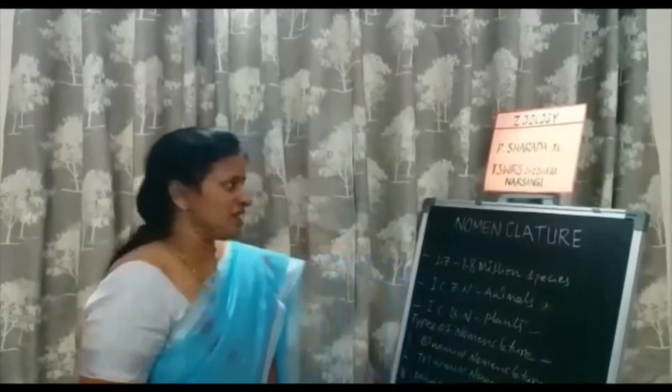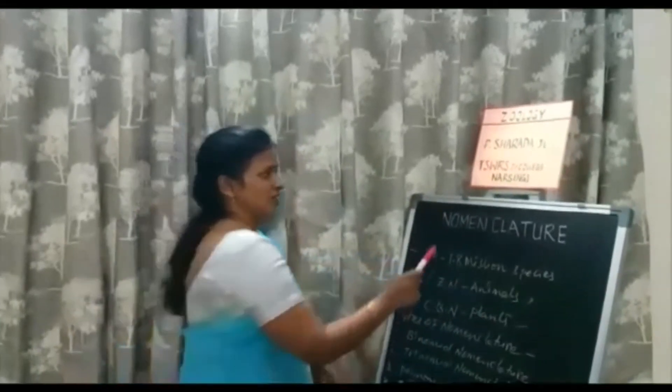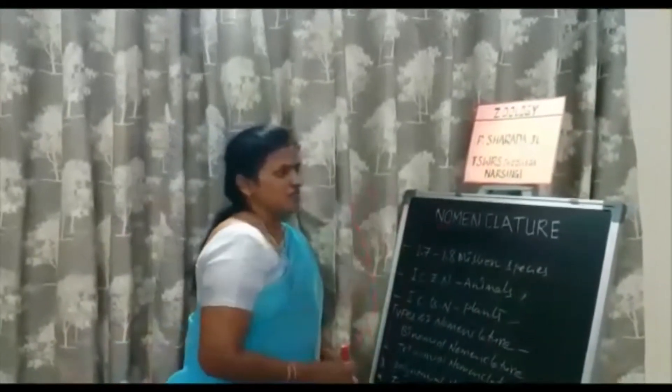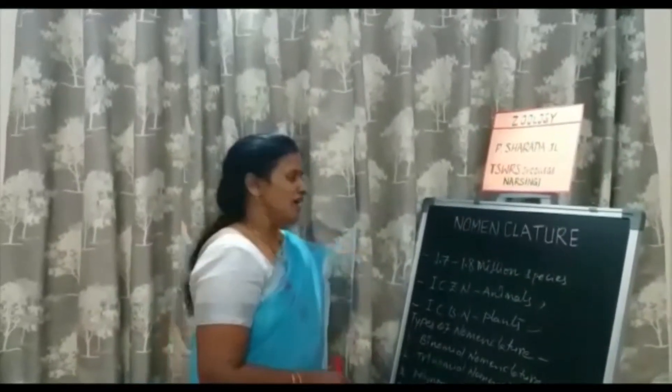So, naming an object, an animal, a plant, or an organism is called nomenclature. Today's topic is nomenclature. Nomenclature means naming a plant, animal, or any organism.